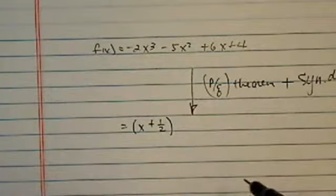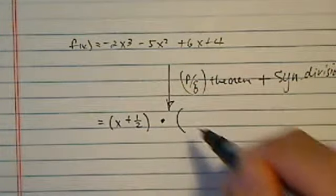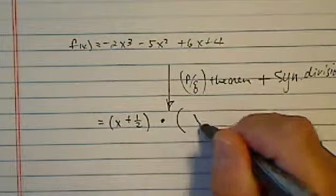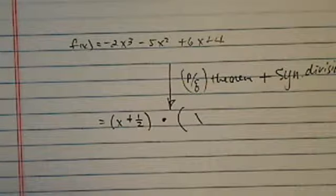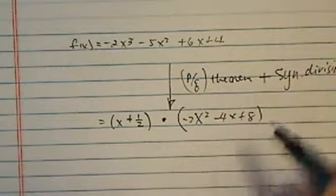And then we used PQ theorem and synthetic division, or if you prefer you can use long division, but I wouldn't advise it. And then this one, we said, well, this one, if you do a synthetic division on that, it's going to be equal to minus two x squared minus four x plus eight.